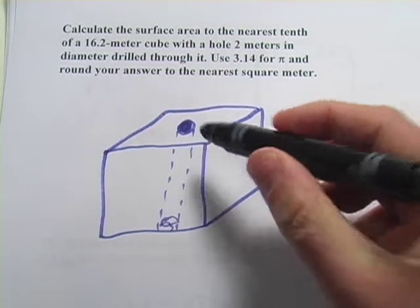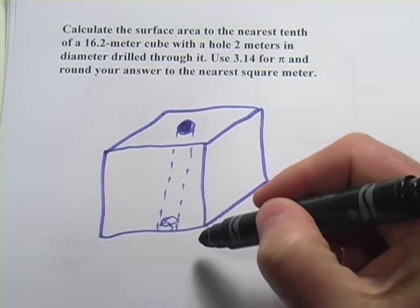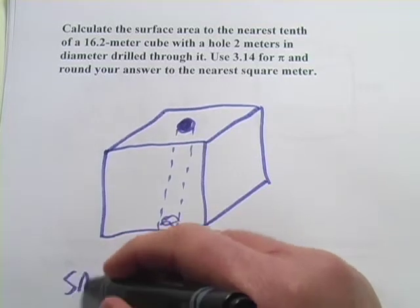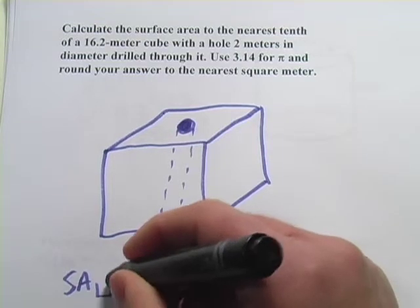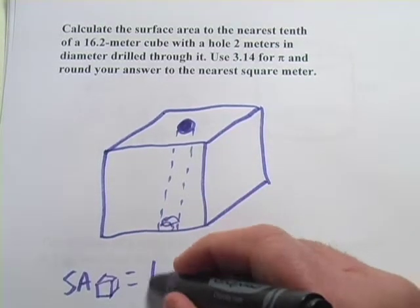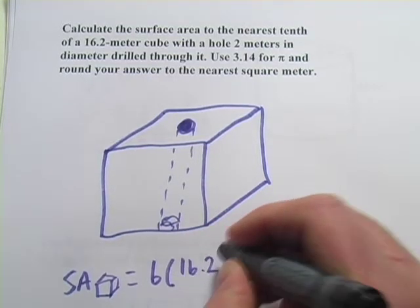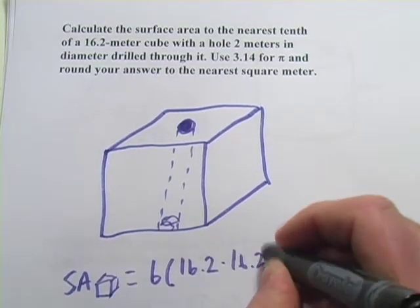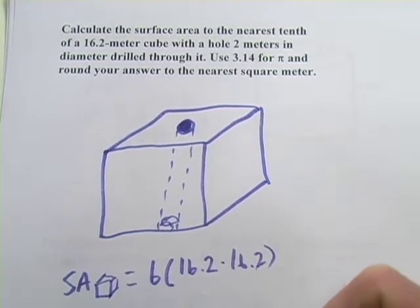So one of the things that happens here is that the surface area of the cube is pretty easy to figure out, right? So the surface area of the cube is going to be the area of each of the sides multiplied by the six sides. So that's just going to be 6 times 16.2 times 16.2. So length and width is the sides of each square face multiplied by the six faces.